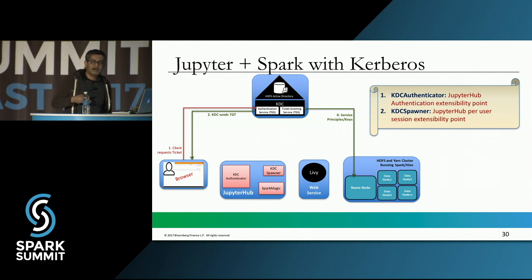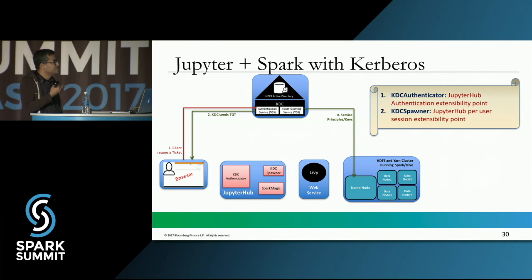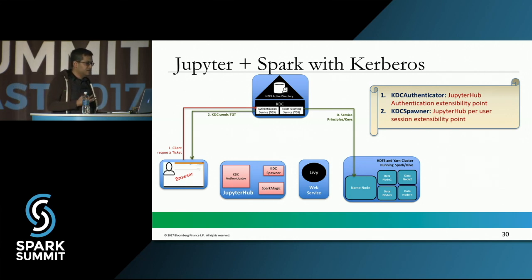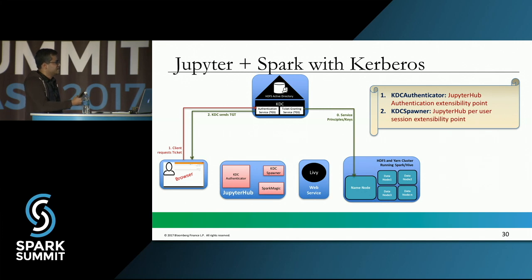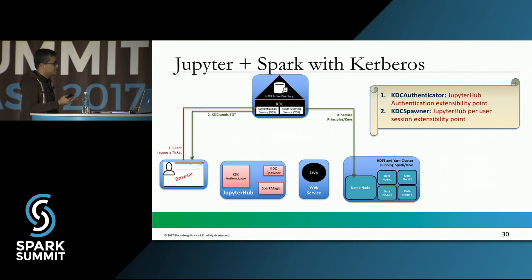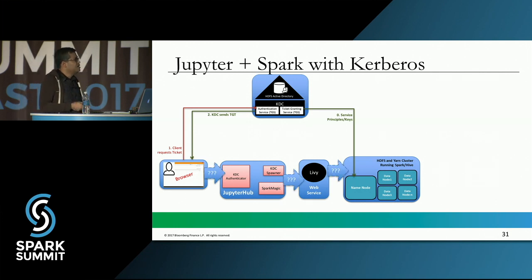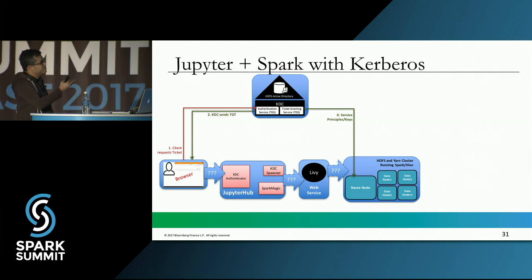The challenge is that every point of communication now has to authenticate. JupyterHub has to authenticate requests from the browser, Livy has to authenticate communication from JupyterHub, and HDFS has to authenticate Livy — all seamlessly with Kerberos. JupyterHub has an extensibility point for authentication, so I introduced a new component called the KDC Authenticator. JupyterHub also has another extensibility point for user sessions called a Spawner, so I introduced a KDC Spawner.